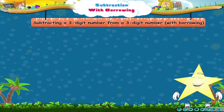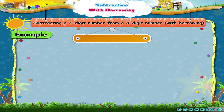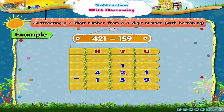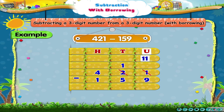Now, Starry, look at this example. 421 minus 159. Here, 1 unit is less than 9 units. So, we borrow a ten. The digit in the tens place is reduced by 1 and the digit in the units place is increased by 10 and becomes 11. 11 minus 9 equals 2.